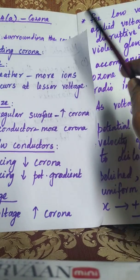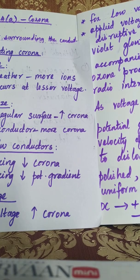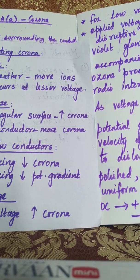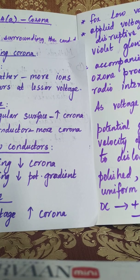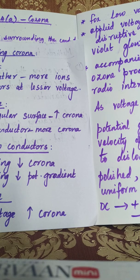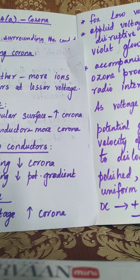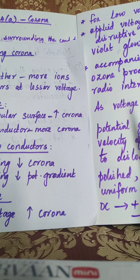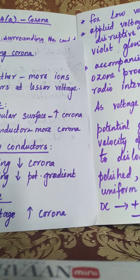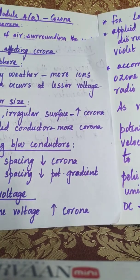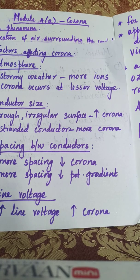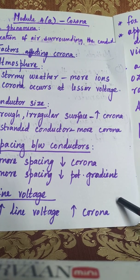The critical disruptive voltage is the voltage at which corona occurs. There is one more voltage called the visual critical voltage — that is the voltage at which we can actually see the corona on the transmission line with our normal eyes. So the two key voltages are: critical disruptive voltage, which is when corona occurs, and visual critical voltage, which is when we can see the violet glow on the conductor. The derivation for these will be covered later.